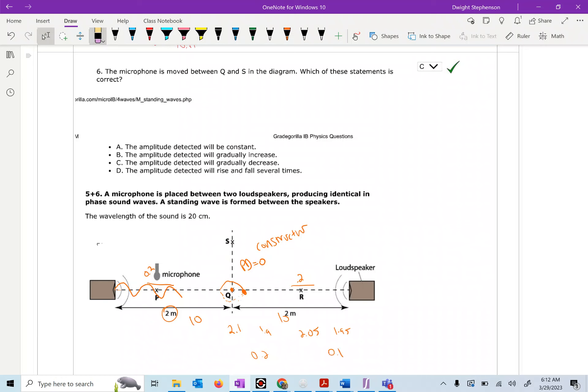So you can imagine you're going to get anti-nodes every 0.5 centimeters. So you get one there, you get another one here, get another one here, because of the path difference.